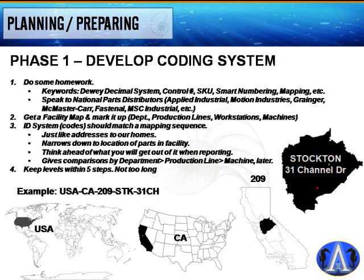Phase one of building an ideal maintenance system is developing a coding system. First, do your homework — search keywords like Dewey decimal system, control number, document number, SKU, smart numbering, and mapping. You can also speak to national parts distributors like Applied Industrial, Motion Industries, Grainger, McMaster-Carr, Fastenal, and MSC Industrial to pick up ideas. Then get a facility map, mark it up, and break it up by departments, production lines, workstations, and machines.